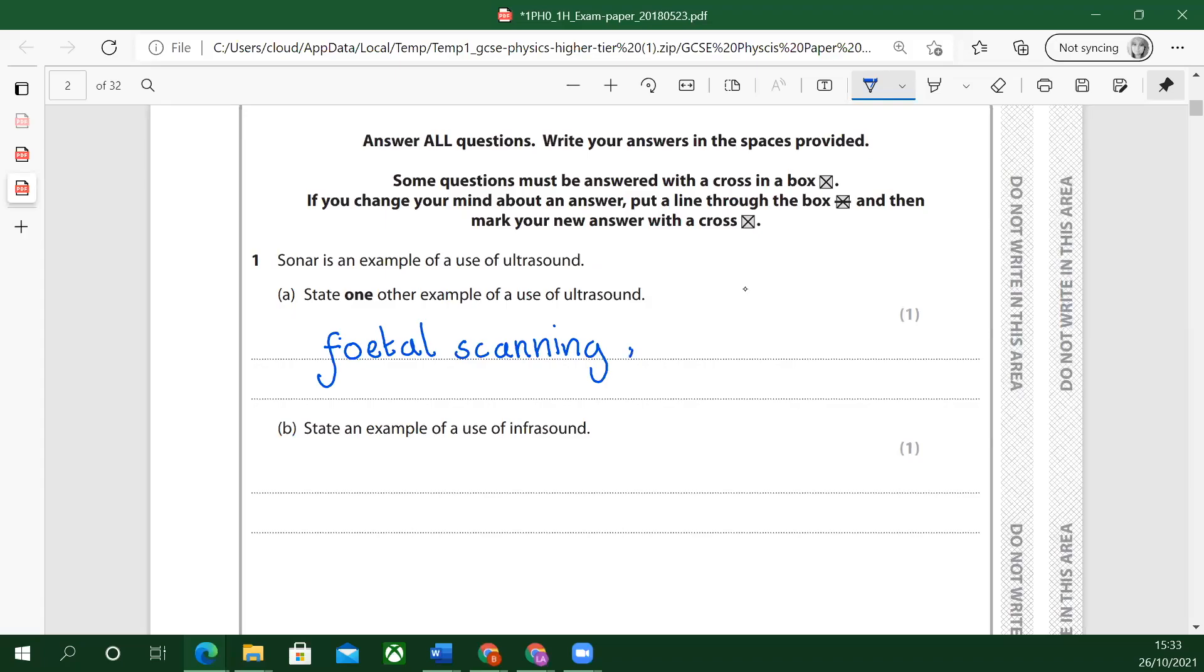So that's only one mark. Other things you could have had, but you only need this. Other things that you could have had for that one would be scanning for kidney stones. They would accept kidney stones, they would accept baby scanning, but I would use the real words: fetal scanning, scanning for kidney stones. If you've got another answer that's correct, they still give you marks, but I think these are the ones you probably want to concentrate on. The medical scanning, that's probably a bit easier to remember.